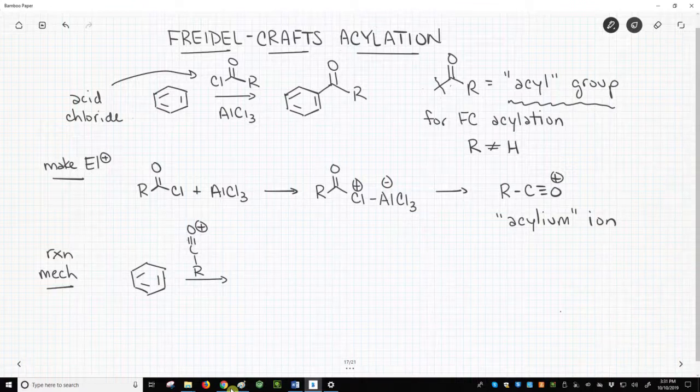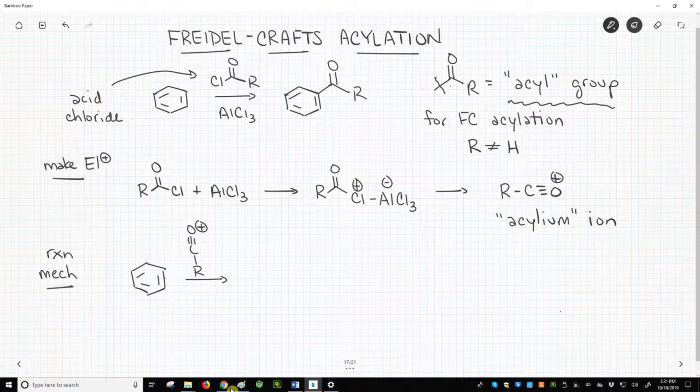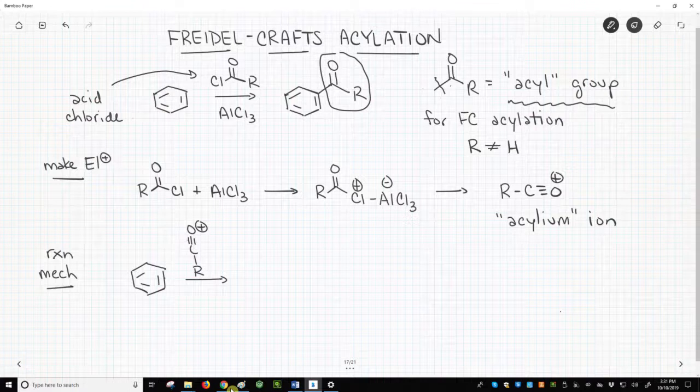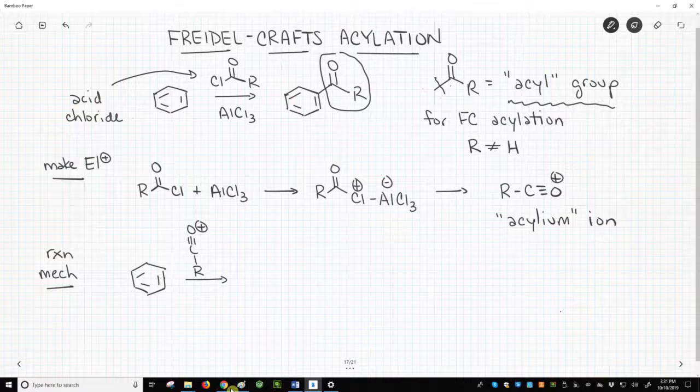In this reaction, over the arrow, we have our acid chloride, a carbonyl attached to a chlorine, and the product ring has an acyl group, a carbonyl attached to an R group. For the Friedel-Crafts acylation, the added R group of the acyl group must include at least one carbon. So R cannot simply be equal to hydrogen.